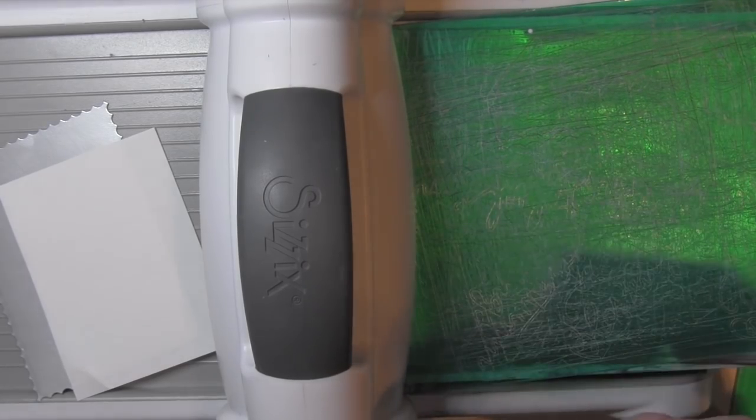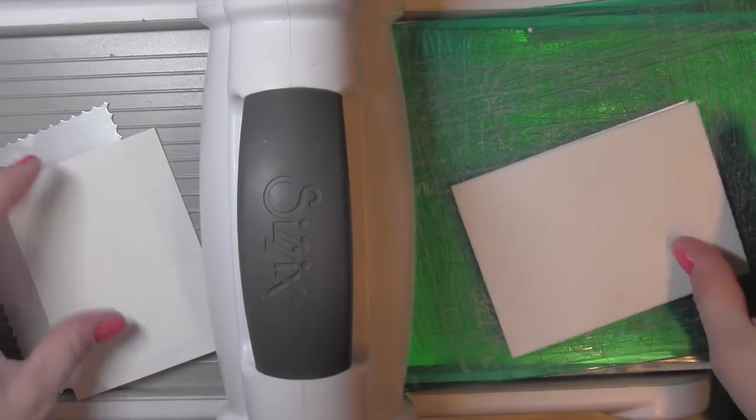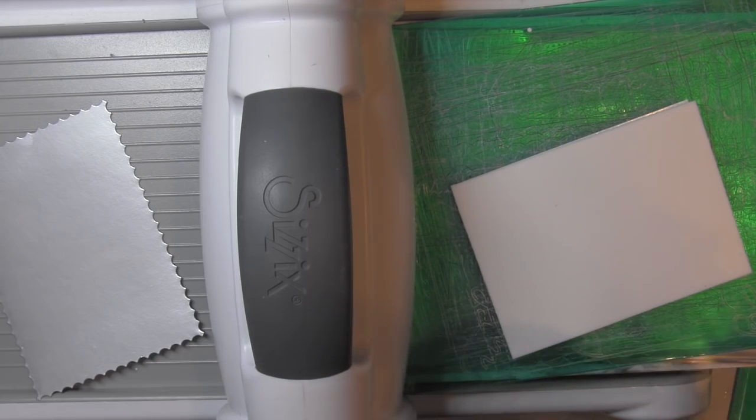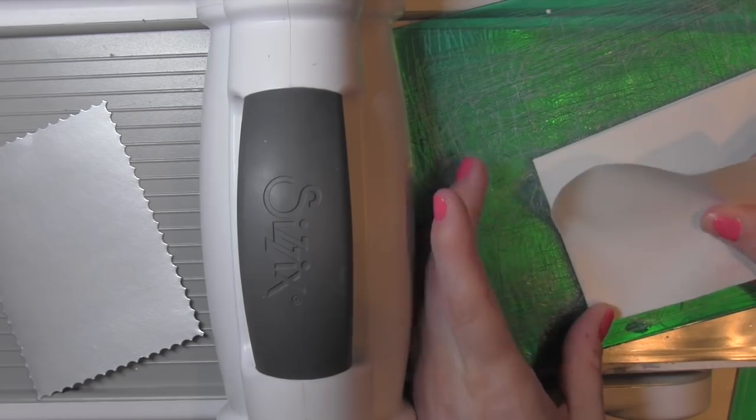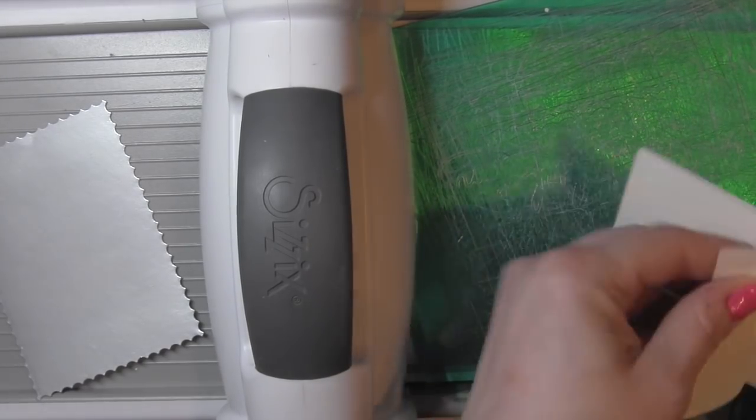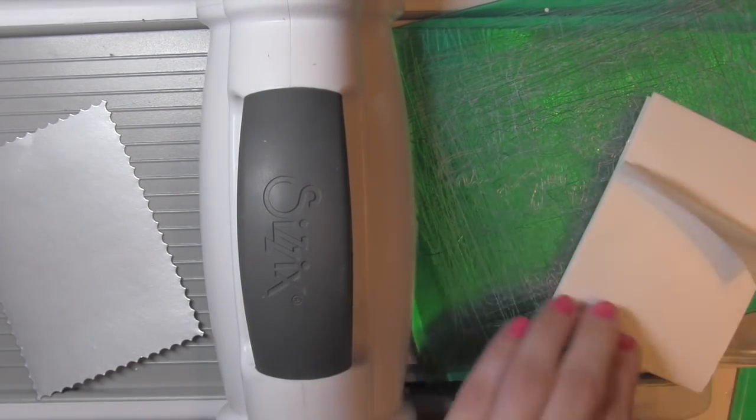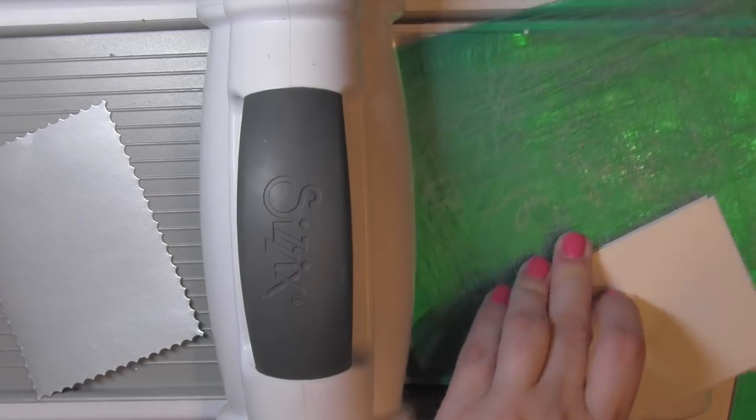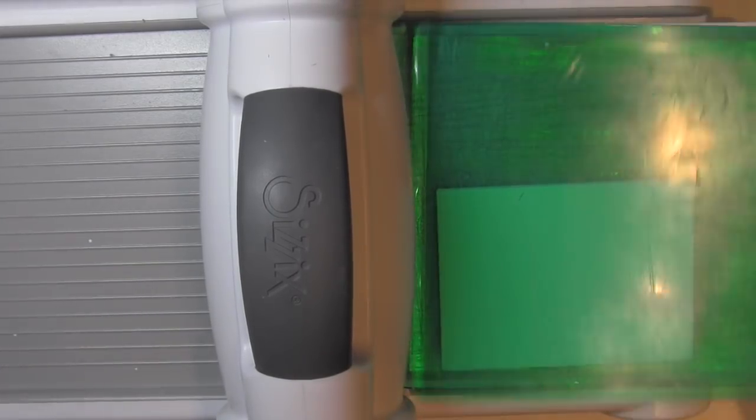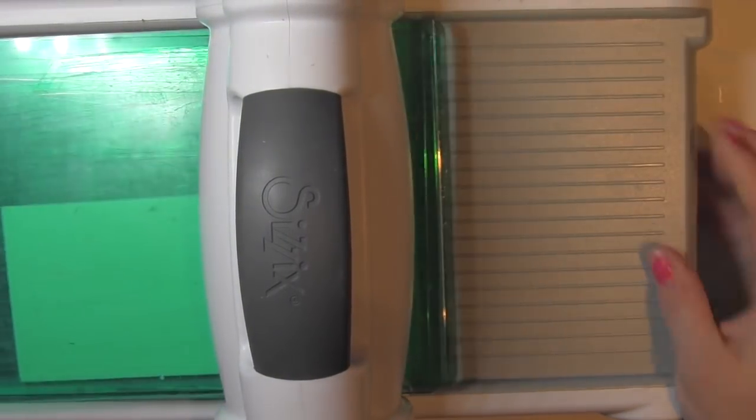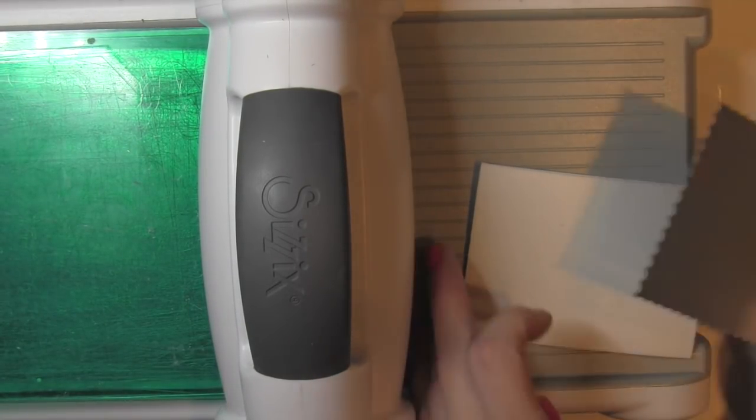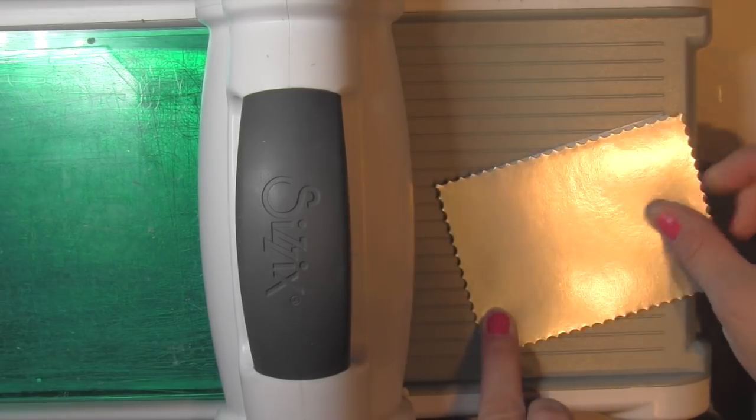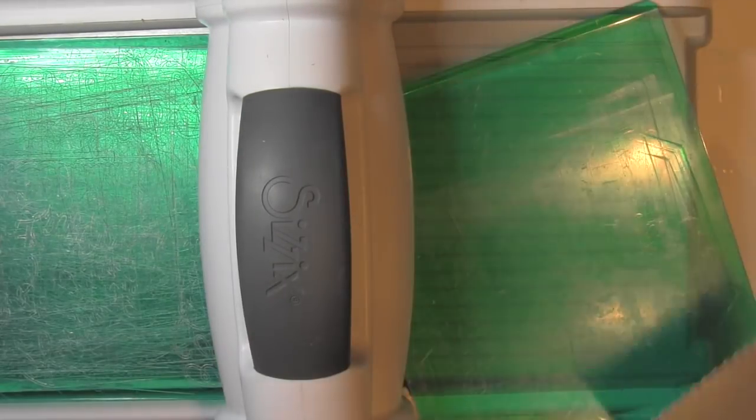I'm going to start by taking some fun foam and applying Stick It to both sides. I'm going to make some dimensional stickers from the Believe die so that I have a dimensional greeting sticker. I'm also going to be taking the snow flurries and die cutting those from some silver metallic cardstock, white glitter cardstock, and silver glitter cardstock.